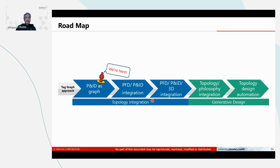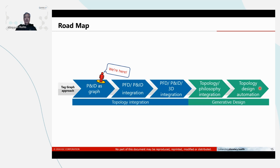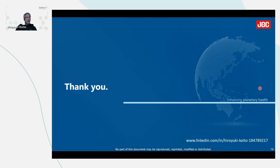So this is our roadmap. We have basically two major phases. The first one is topology integration, the second one is generative design phase. We are still at the first step, and as the next step we are going to move to PFD and P&ID integration. After that, we will integrate 3D as well. Then we move to the generative design phase — we need to integrate plant specs and philosophies, and the final goal will be P&ID generation by using graph techniques. That's it. Thank you very much. If you are interested in this, please send me a message or connect with me on LinkedIn.